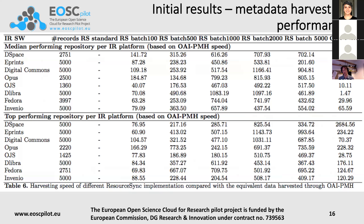If we were to produce materialized resource dumps for everything in those repositories — created before the harvester arrives — those would have even faster performance than ResourceSync batch. The message is that even in a very extreme scenario for ResourceSync, it can be more than 10 times faster than OAI-PMH in delivering records.